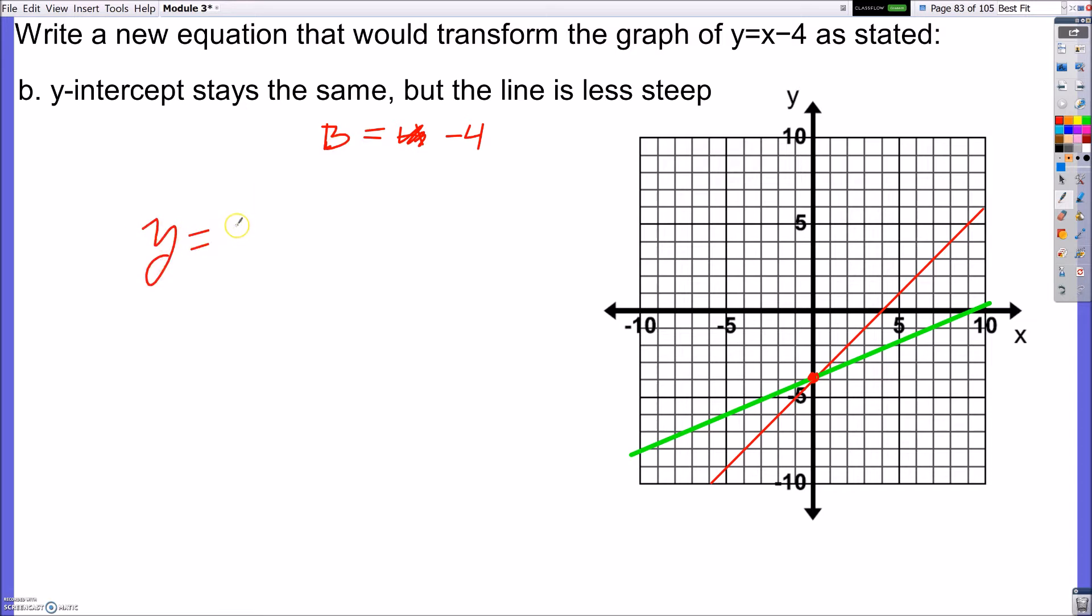So the only thing I need to do now is keep the slope less than it is here. So on my equation, I have a slope of 1x minus 4. This 1 is the slope. I need a number that is less than 1. So an example of that would be y equals 1 half x minus 4. It could be 1 half, 1 fourth, 1 eighth, 2 thirds, so on and so forth. It just has to be less than 1.